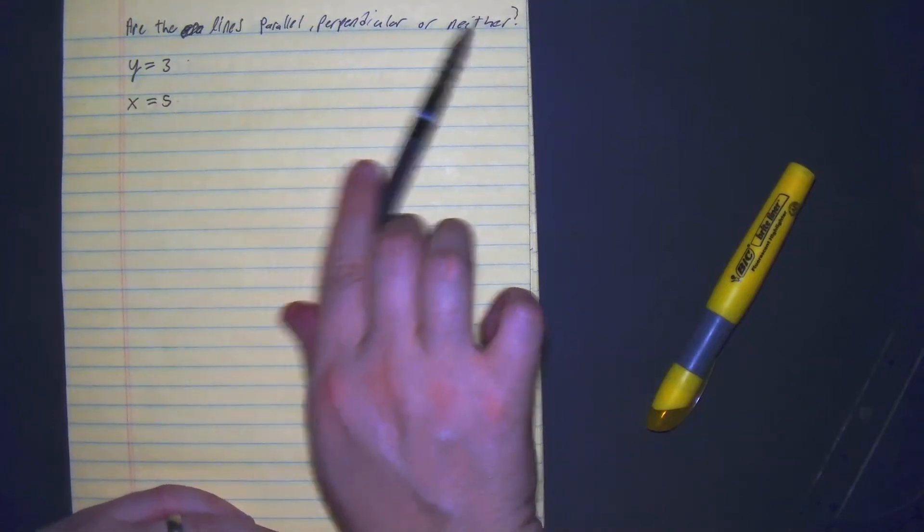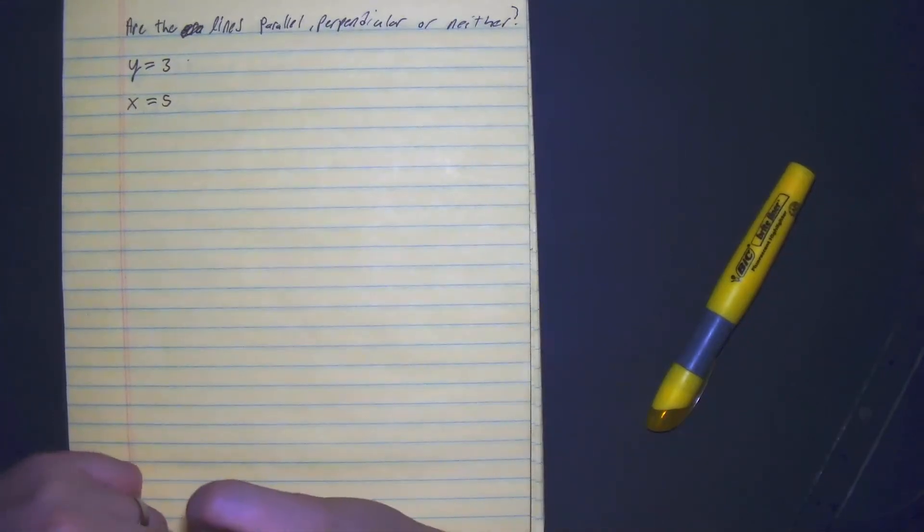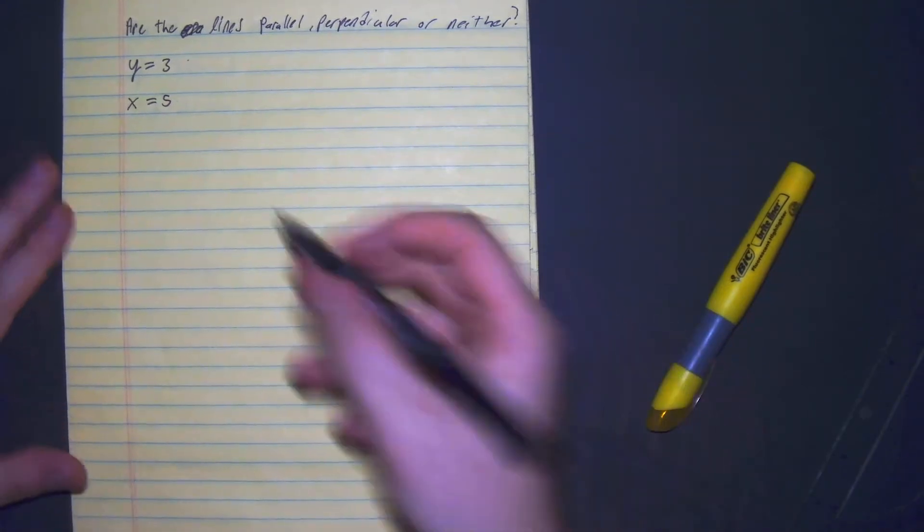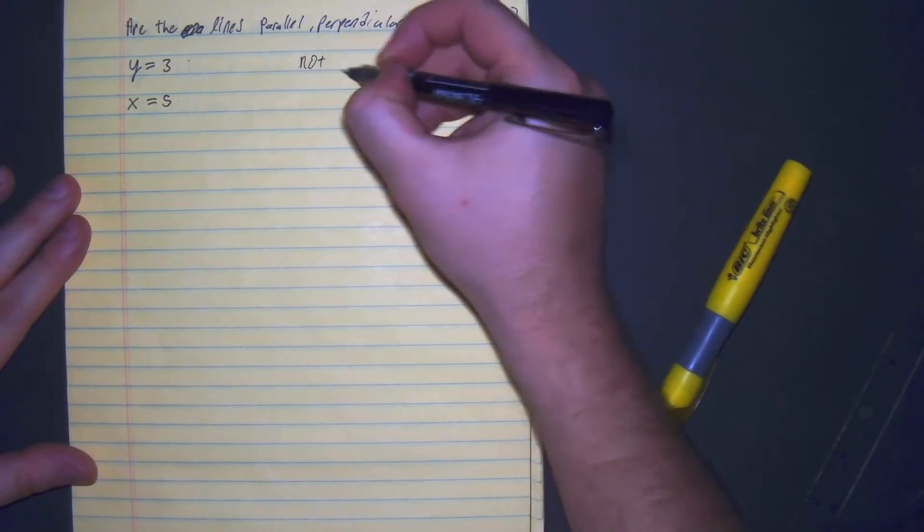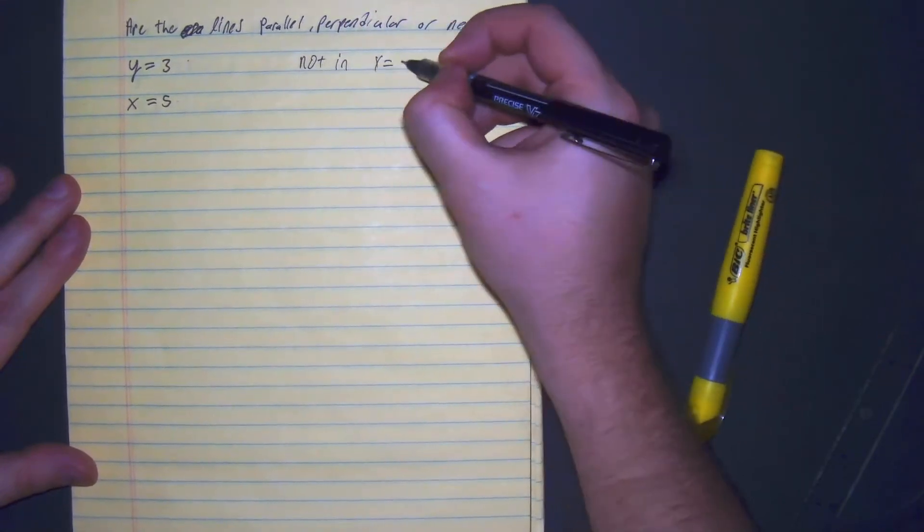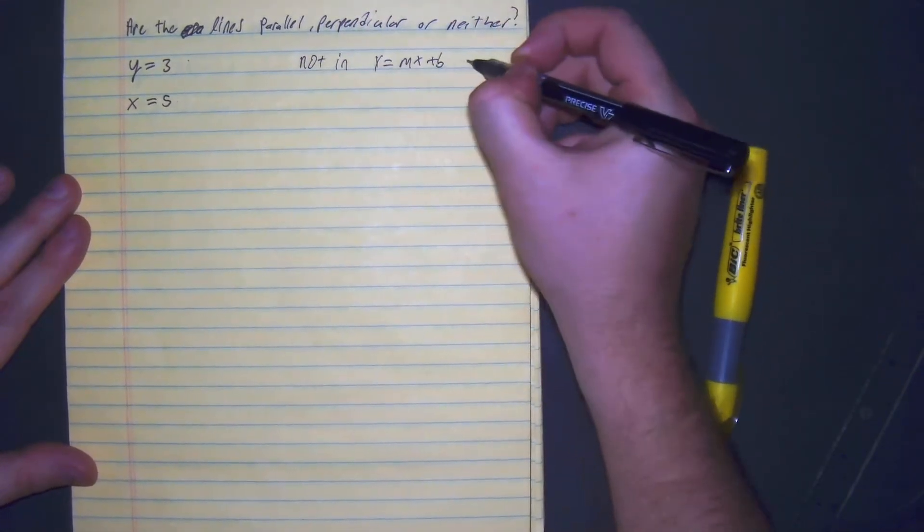Are the lines parallel, perpendicular, or neither? Right away I can see that these are special cases. These are both special cases. They're not in y equals mx plus b form.